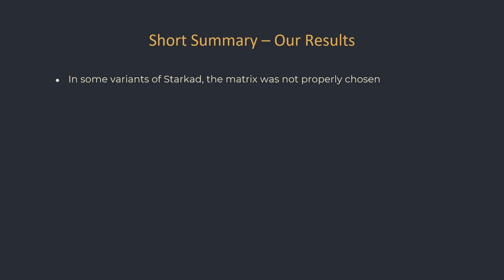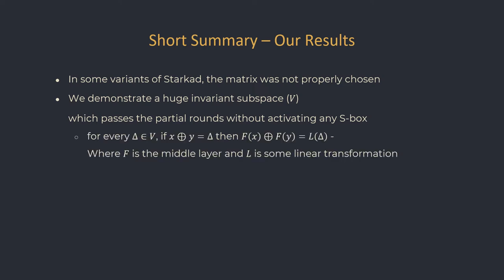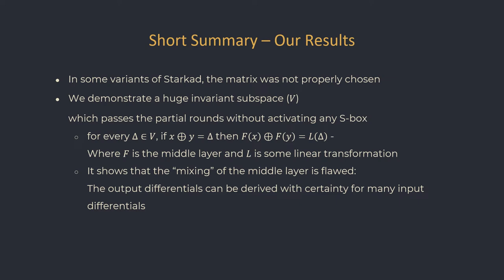In Starkad, however, it was not the case. We show that for some of the Starkad variants, there exists a huge invariant subspace which doesn't activate any S-box in the partial rounds. What we mean by invariant is that the linear transformation used in Starkad maps this subspace to itself. For every difference delta from our invariant subspace V, and every two inputs x and y with this difference, the difference of the output is determined completely by delta.